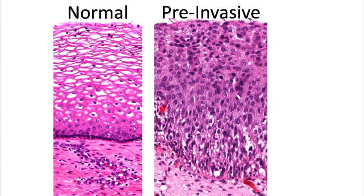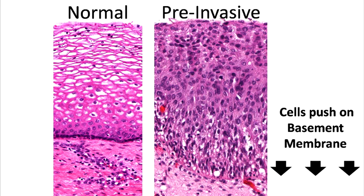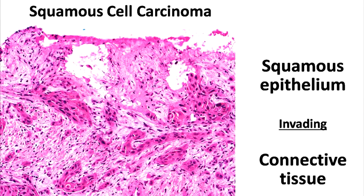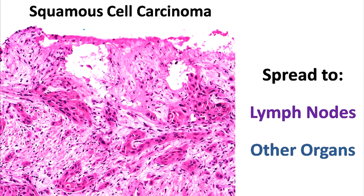In pre-invasive lesions, cells push on the basement membrane. Note the dark color and large size of the nuclei of the virus-infected cells, and note the disorganization of the cells in this area. In squamous cell carcinoma, these atypical squamous epithelial cells invade the connective tissue. In this example, it's actually difficult to tell that this is cervix. When cancer cells invade, they may access lymphatics or blood vessels, and unfortunately this can help the cancer spread to other parts of the body.